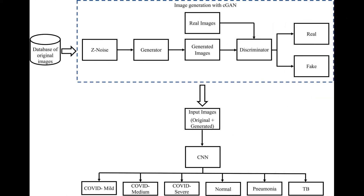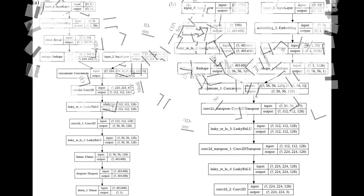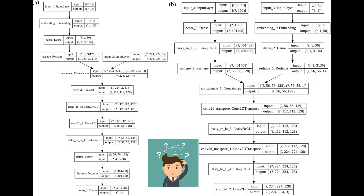CGAN is used to increase the number of x-ray images from a few hundreds to a few lakhs. Then transfer learning is applied onto the supervisory dataset to get a final six-class disease prediction. This is how the CGAN model looks like.